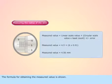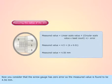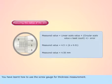The formula for obtaining the measured value is shown. Now you consider that the screw gauge has zero error. So the measured value is found to be 4.56 mm. You have learnt how to use the screw gauge for thickness measurement.